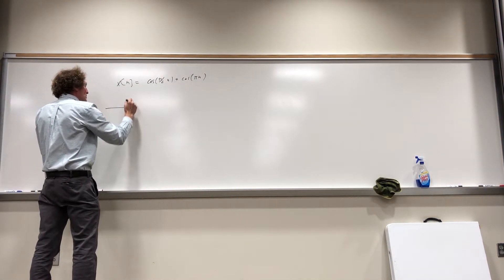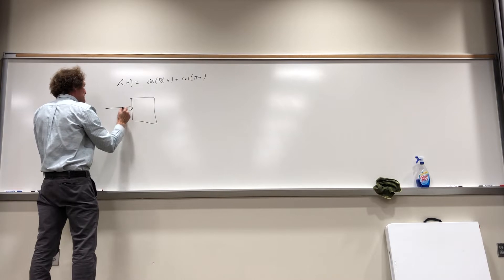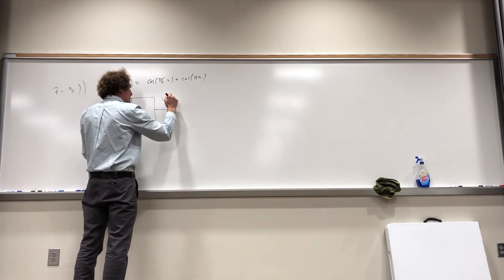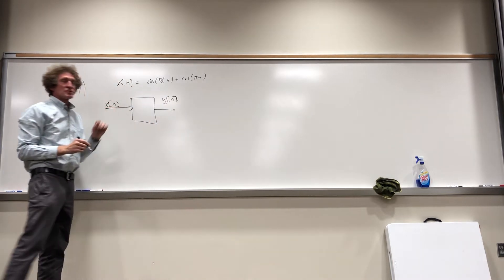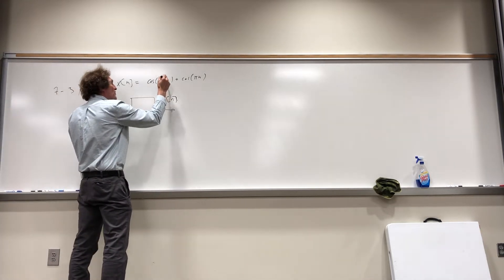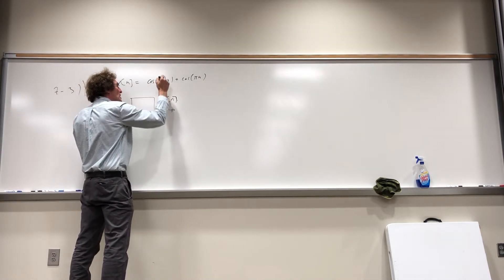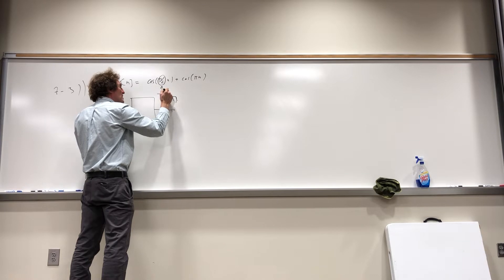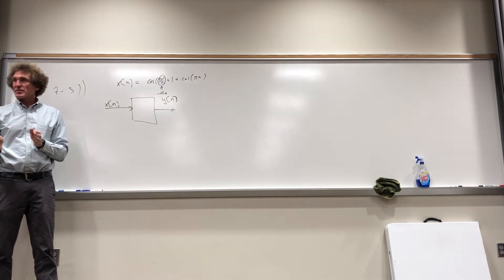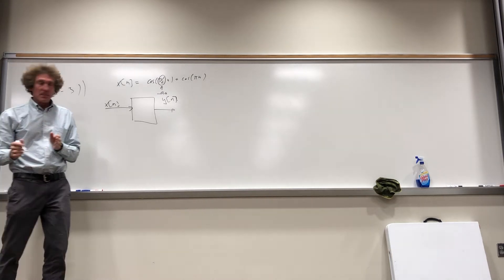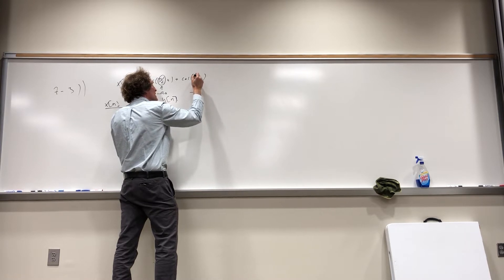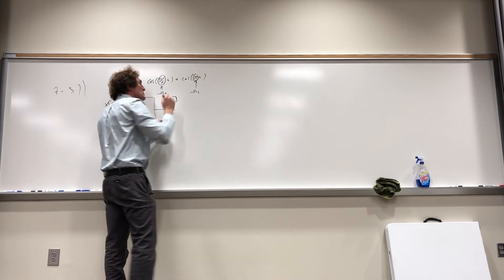Try to think of it this way: we have a system. This is the input, x[n], and this is the output, y[n]. Now the first thing you notice about this is it is at a constant frequency, and here's how you know that. The coefficient of n in here you can identify as just ω₀ — that's a frequency. It doesn't change. So this thing's at a constant frequency. Here, this you can call ω₁ — that's the other frequency of interest.